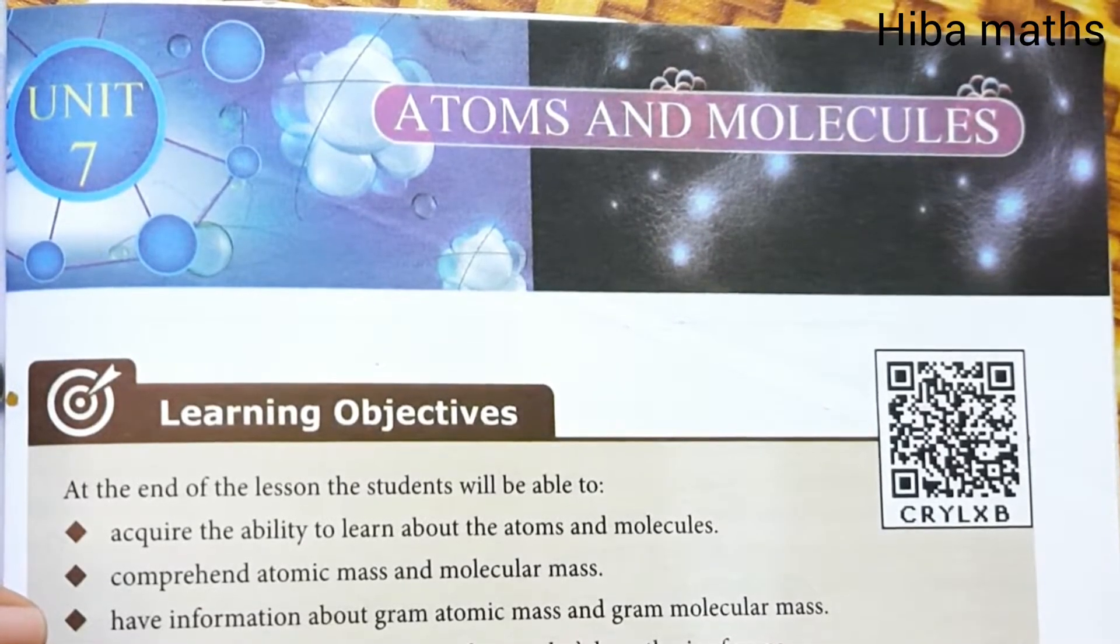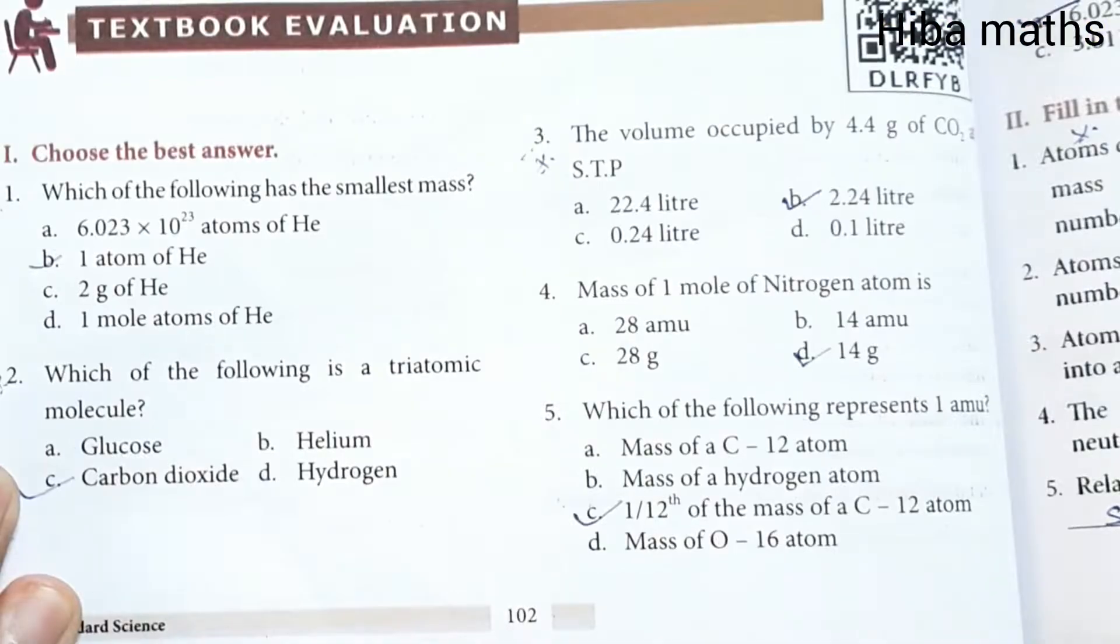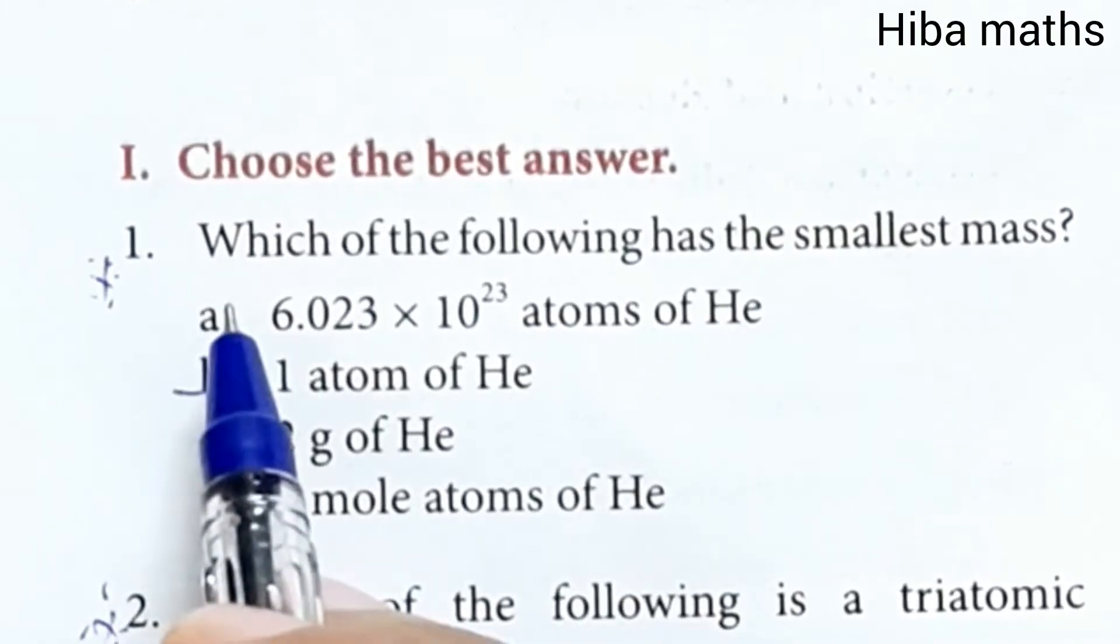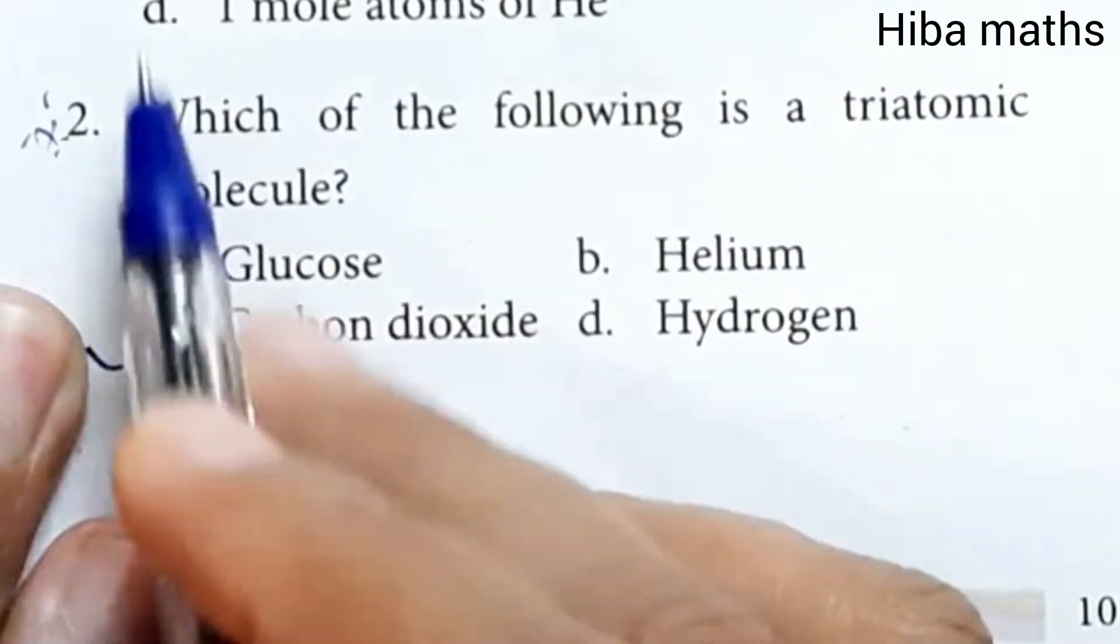Hello students, welcome to Hibamax study time, 10th standard science, Unit 7: Atoms and Molecules. Let's look at the book back questions. Choose the correct answer. First question, which of the following has the smallest mass? One atom of helium. Important question.